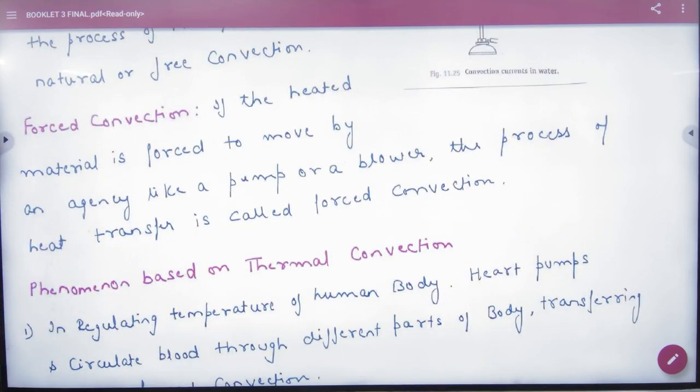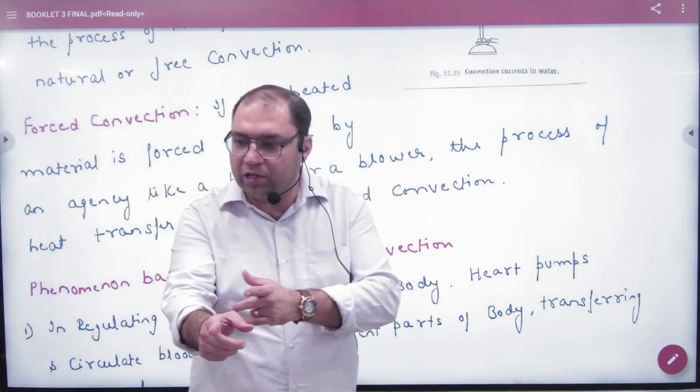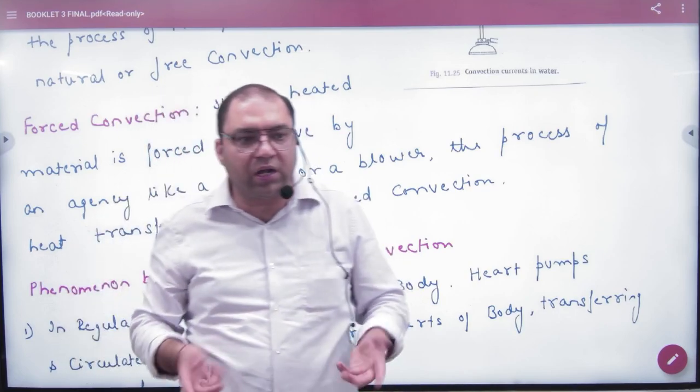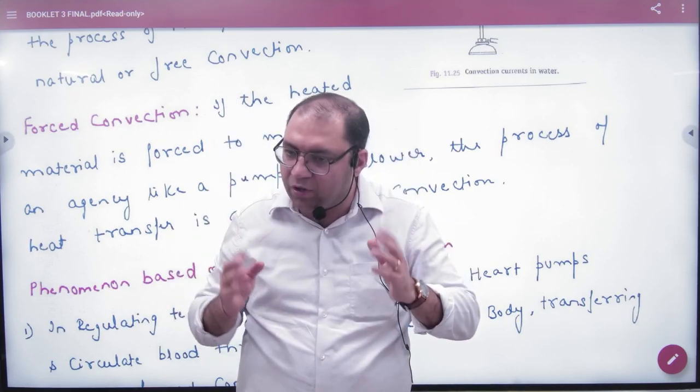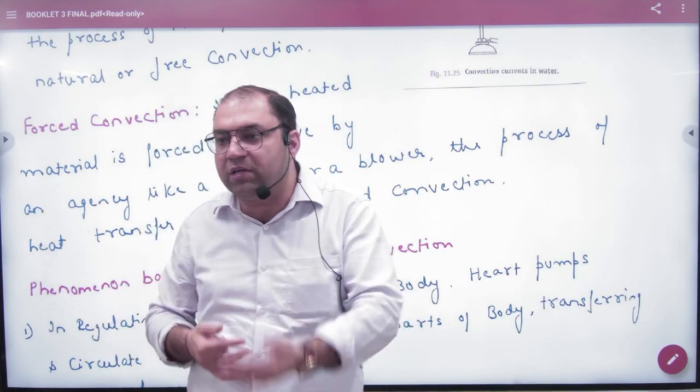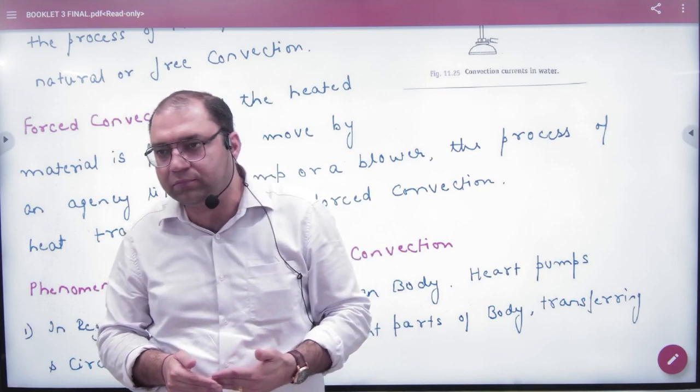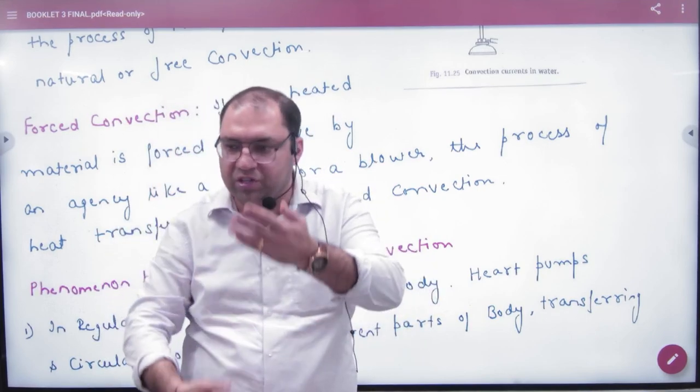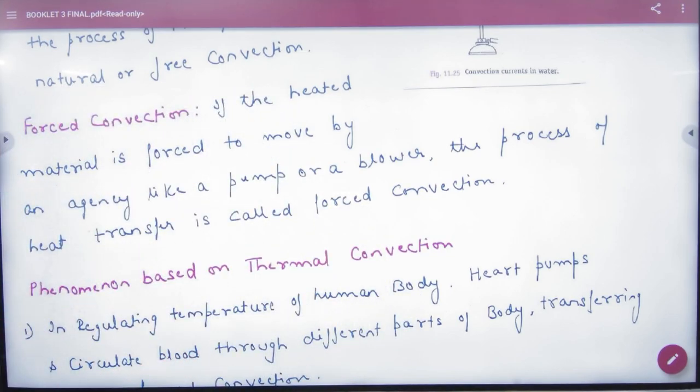In forced convection, we are doing this ourselves. For example, if I come to a room and take a blower to push warm air, I am forcing warm molecules to move. They will go up, then cold air will start flowing. By warming through water or other materials and forcing molecules to move, air circulation starts. This is called forced convection.